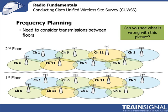This picture illustrates a problem you have to consider in site planning. The issue here is that directly above floor one on floor two, I've deployed the access point on the same channel as on floor one. So what this means is that if I have spillover, that spillover is going to be on the same frequency — they're going to overlap and interfere with each other.